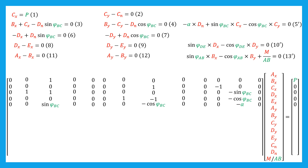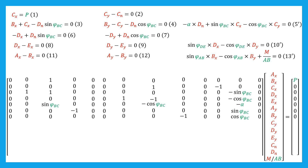For the sixth row using equation 6, minus DX plus DN·sin(phi_BC) equals zero: we have minus 1 in column 4 and sin(phi_BC) in column 12, with zero elsewhere. For the seventh row using equation 7, minus DY plus DN·cos(phi_BC) equals zero: we have minus 1 in column 9 and cos(phi_BC) in column 12, with zero elsewhere. For row 8 using equation 8: we have 1 in column 4 and minus 1 in column 5, with zero elsewhere.